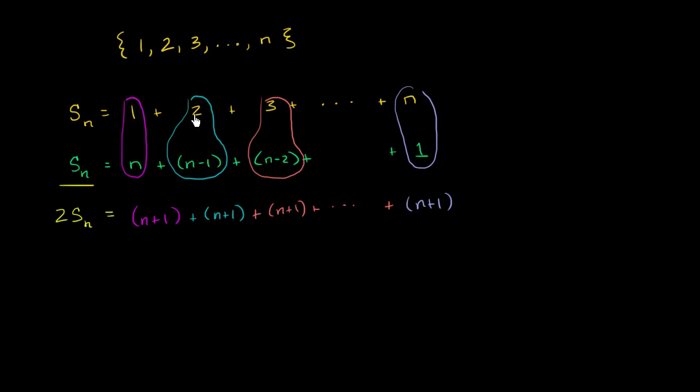There were n of these terms in each of these equations, one, two, three, all the way to n. So we can rewrite this thing as two times s sub n is equal to, you have n n plus one terms. So we could write it as n times n plus one.